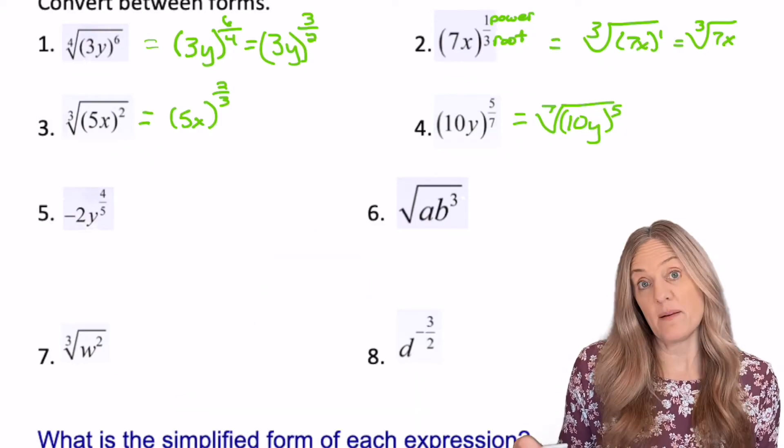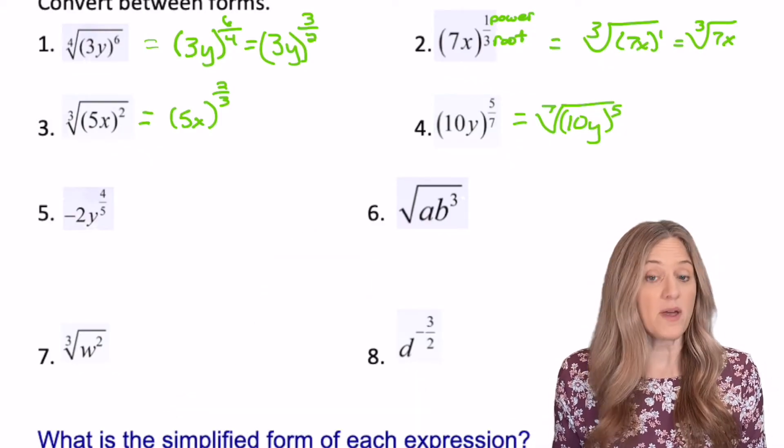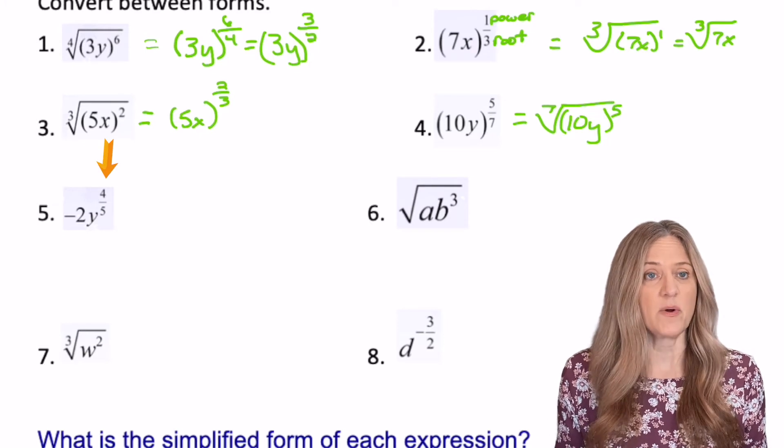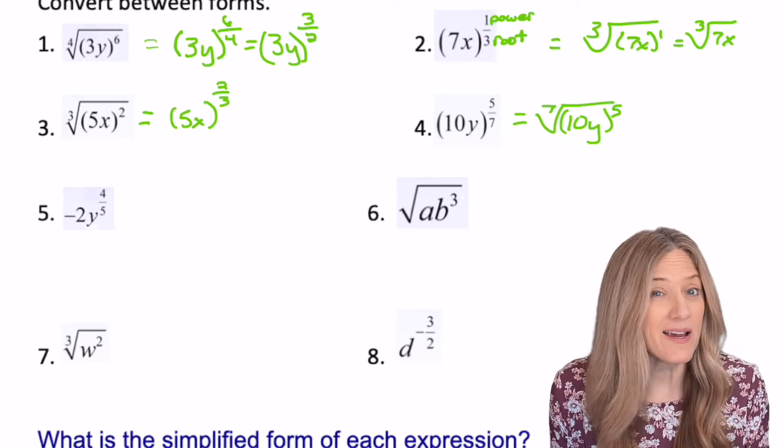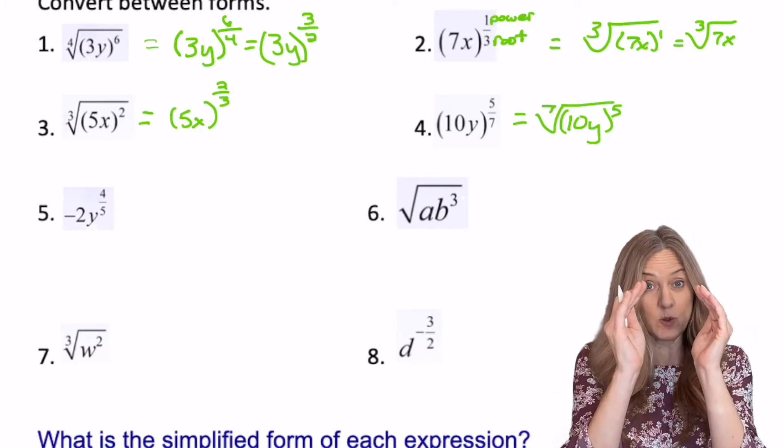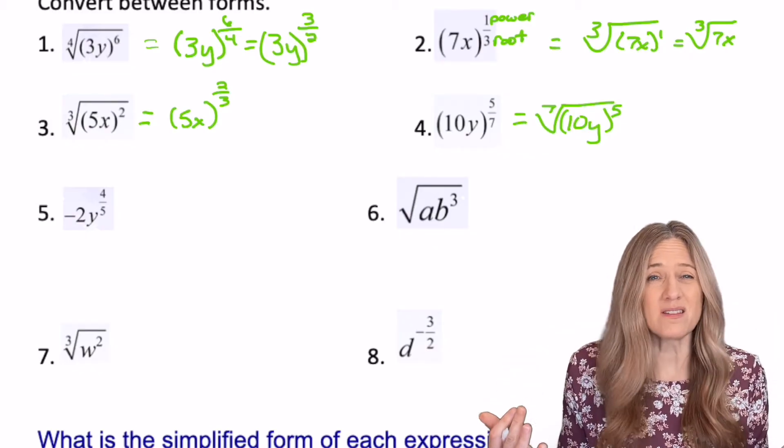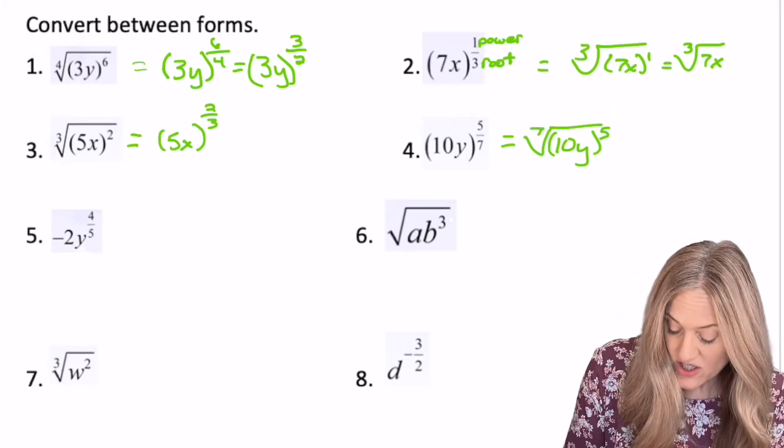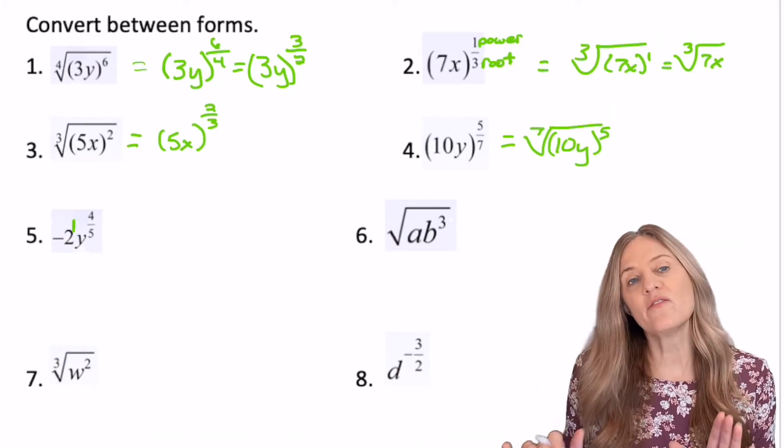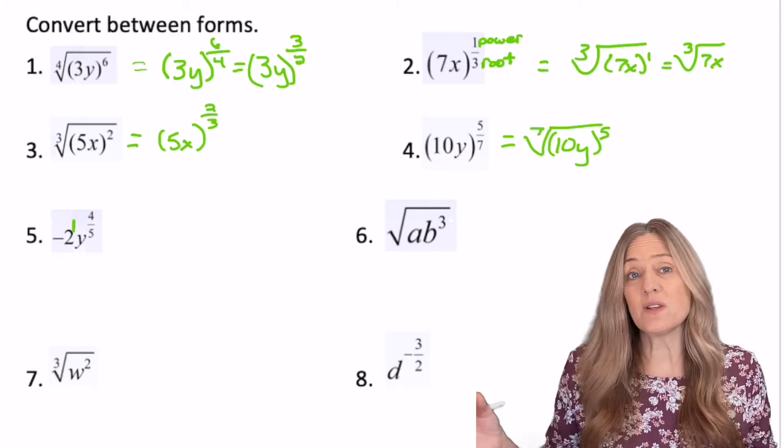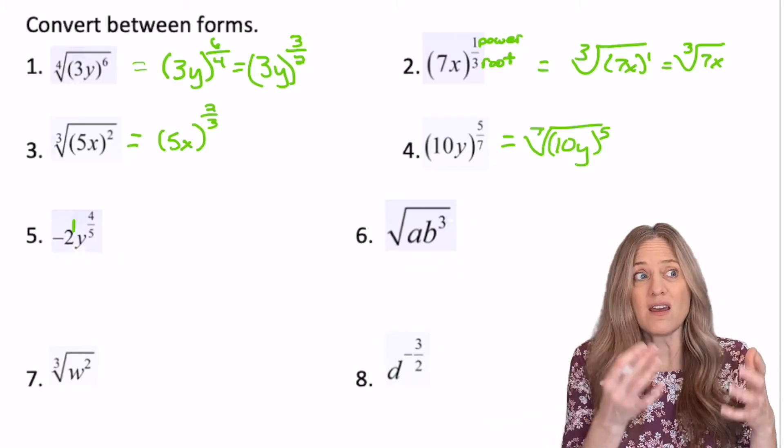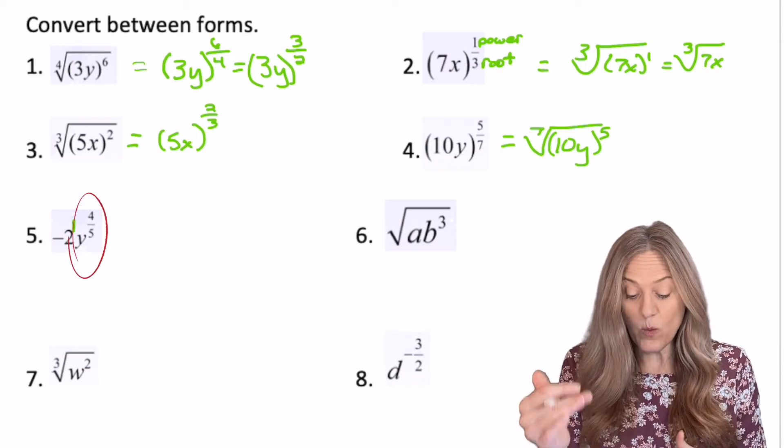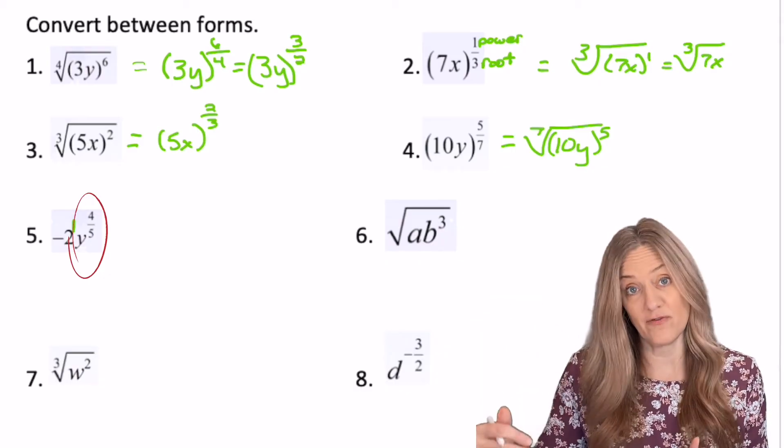Here's a good reason to keep that in mind. Look at number five. Okay, four fifths. I see that exponent. What does that apply to? Does that apply to the 2y? No, it's not in parentheses. What exponent is on that negative two? Well, that's just a one. So when we go to convert this to radical form, the negative two is just negative two. It's going to just stay that coefficient in front. But then y to the four fifths, I can convert.